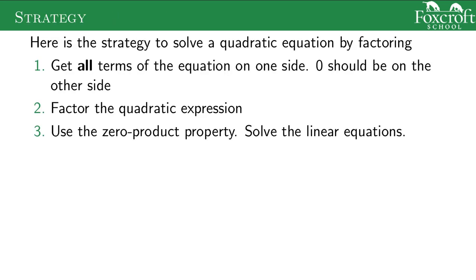Here's the general strategy for solving a quadratic equation by factoring. Our goal is to eventually use the zero product property. So the first thing we're going to do is get zero on one side, which means everything else on the equation needs to be on the other side. We're going to move everything to one side of the equation and have zero on the other side.